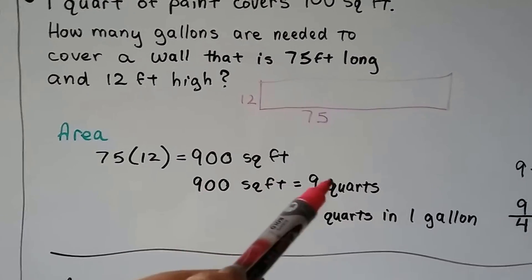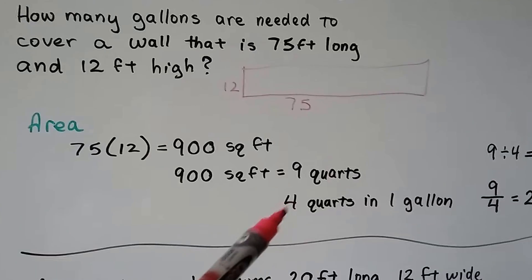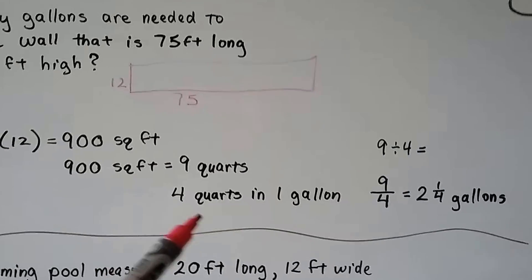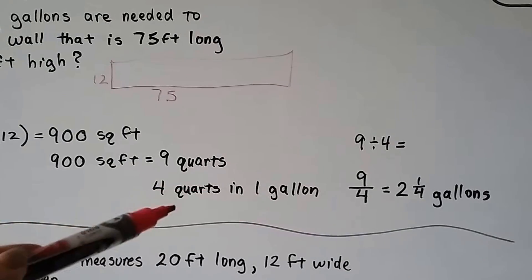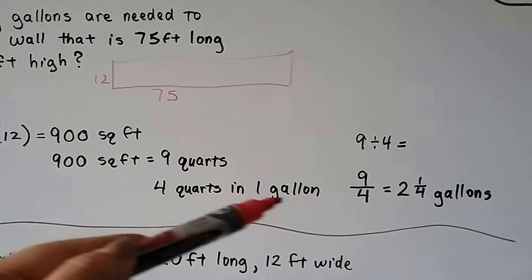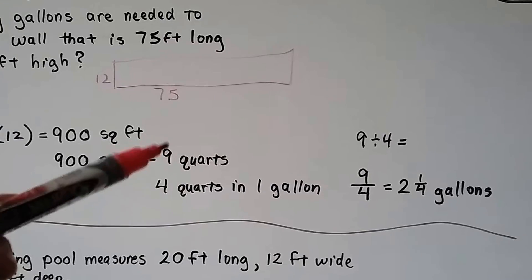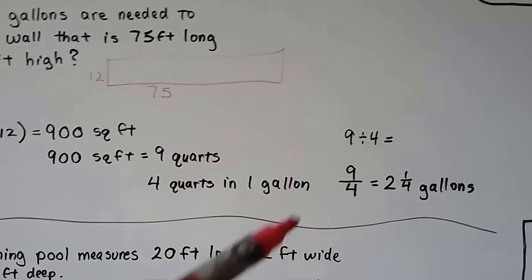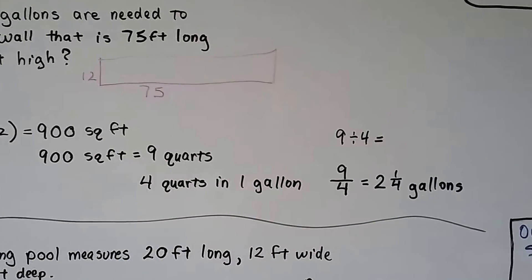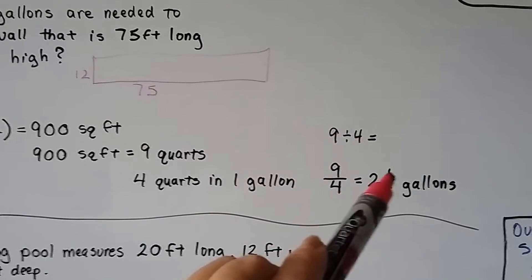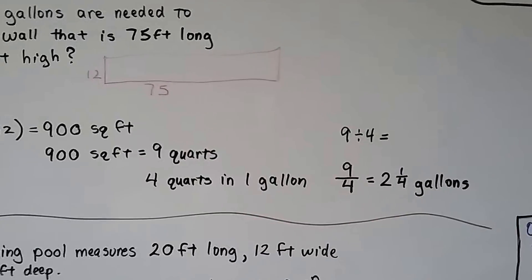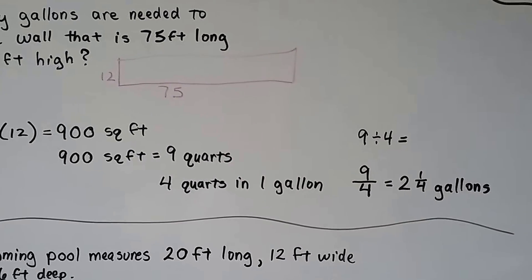Now all we have to do is convert this to gallons. So what we're doing is 9 divided by 4. How many 4 quarts that equal a gallon can we pull out of this 9 quarts? So fractions are little division problems. This is 9 divided by 4 and we simplify it as 2 and 1 fourth gallons or 2.25.